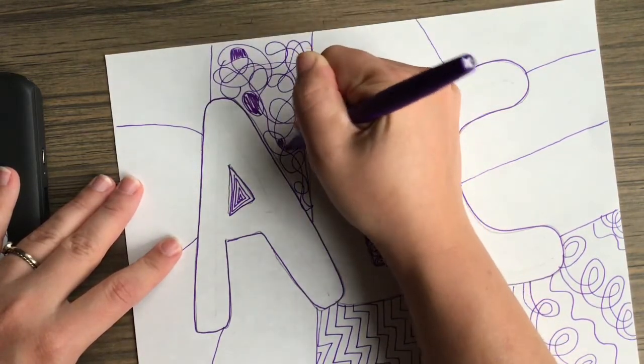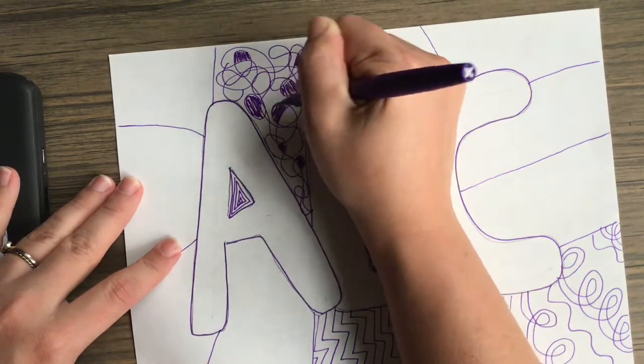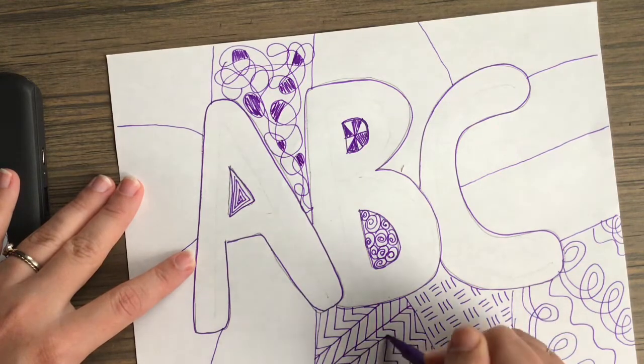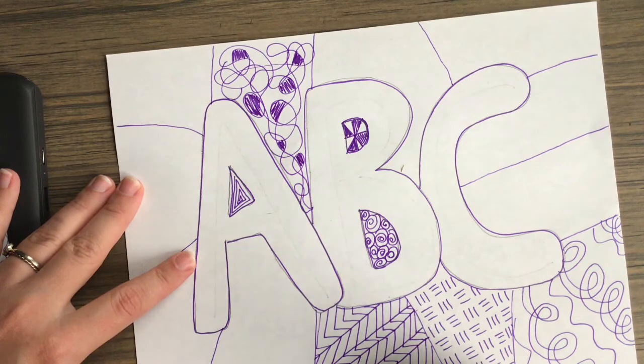What I do is I just put down my marker and I don't pick it up until I feel like the space looks awesome. And then I start filling in certain shapes that I've created by coloring in with the marker to darken up some areas.